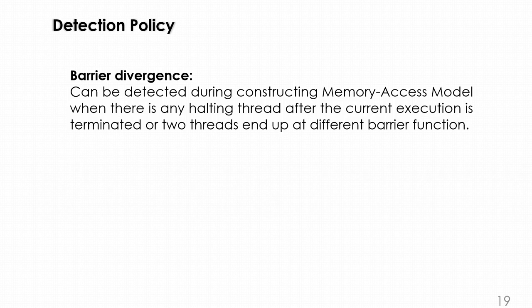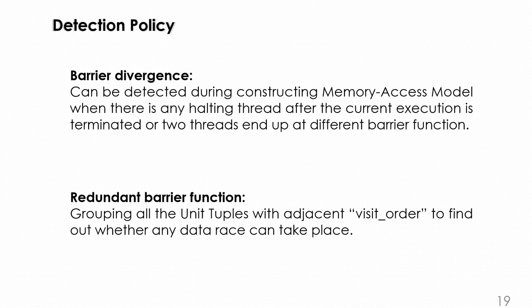Barrier divergence can be detected during constructing memory access model when there are any threads where after the current execution is terminated, or two threads end up at different barrier functions. For redundant barrier functions, we group in-order unit tuples with adjacent visit order to find out whether any data race can take place.